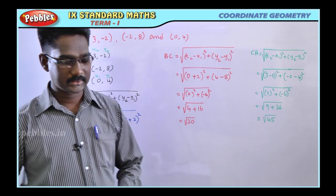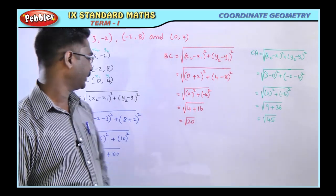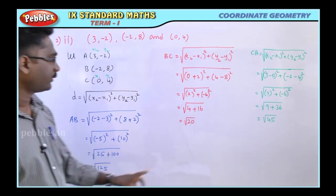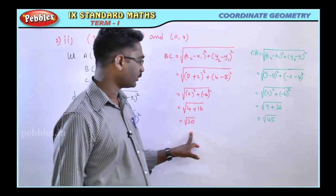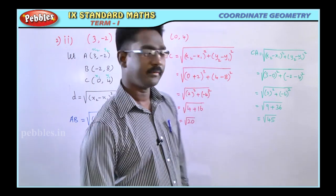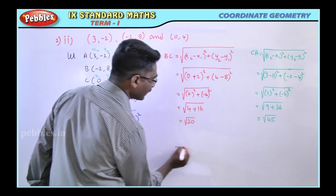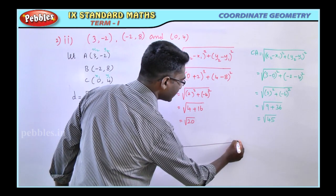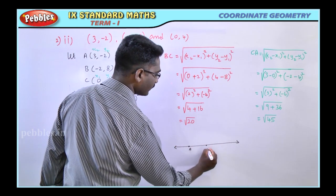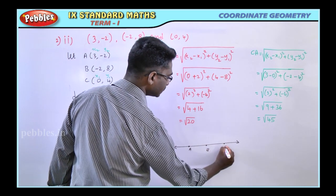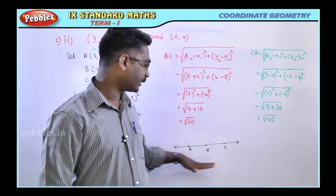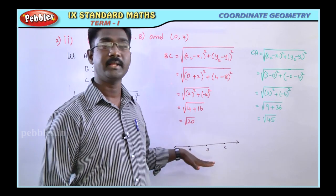So the three distances are: AB = √125, BC = √20, CA = √45. Collinear points lie on the same line. Suppose points A, B, C lie on the same line — that is collinear points; the points are lying on the same line.